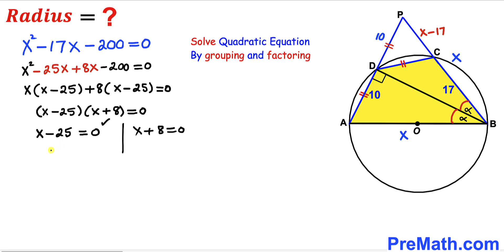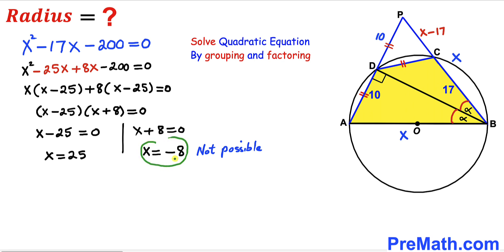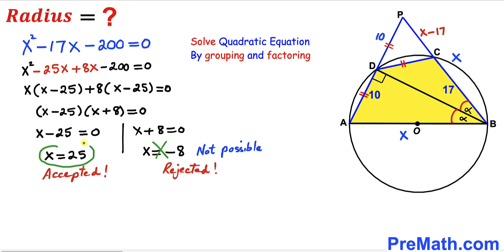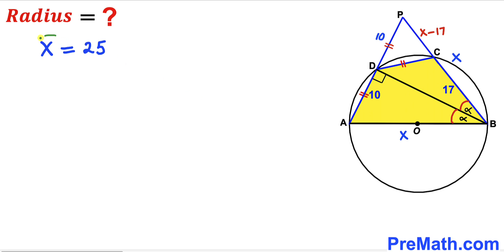From the first equation X equals positive 25; from the second, X equals negative 8. Since X represents the diameter, a negative value is not plausible, so we reject X equals negative 8 and accept X equals 25. The diameter of the circle is 25 units.